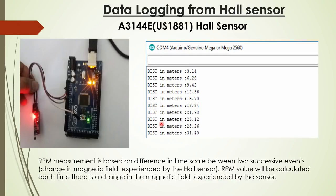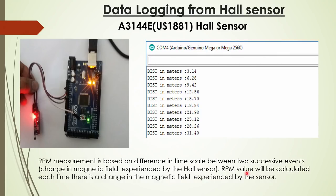For data logging from the hall sensor, we used the A3144E hall sensor, which directly gives you the distance in meters. As the pulses keep coming you see the distance reading: 3.14, 6.28, 9.42 — units of 3.14 repeating, coming out very nicely. RPM measurement is based on the difference in time between two successive events — change in magnetic field experienced by the hall sensor. You convert those periodic pulses into distance in meters.